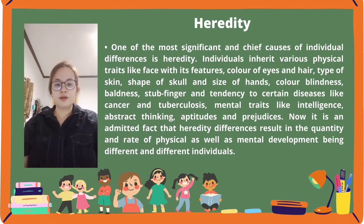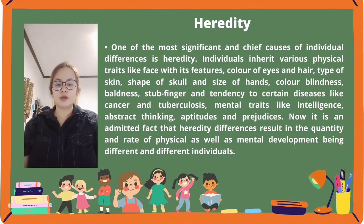Individuals inherit various physical traits like facial features, color of eyes and hair, type of skin, shape of skull and size of hands, color blindness, baldness, stub finger, and tendency to certain diseases like cancer, diabetes, and tuberculosis. Mental traits like intelligence, abstract thinking, attitudes, and prejudice are also inherited.